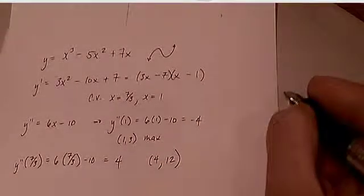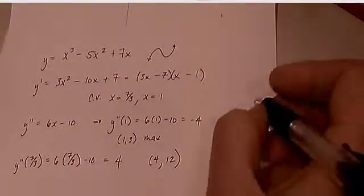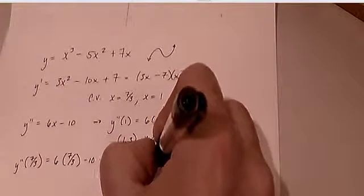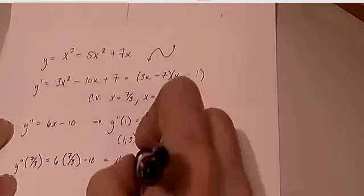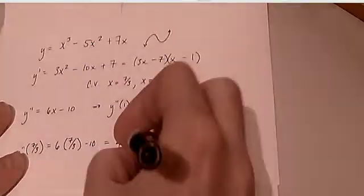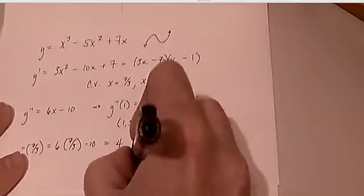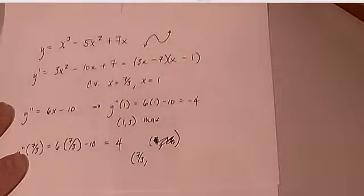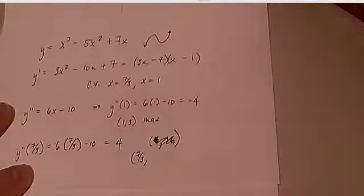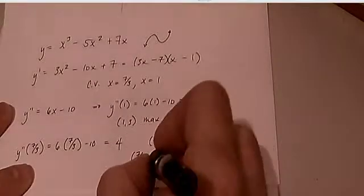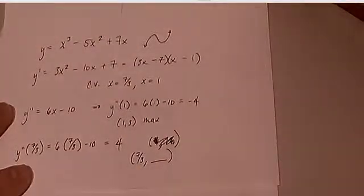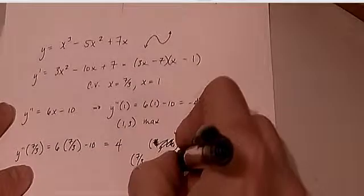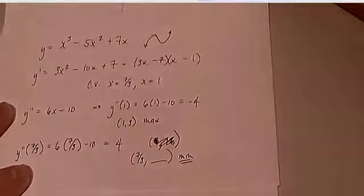Oh wait — I was plugging in 4 there, but we should be plugging in 7/3. I was concentrating so much on my explanation that I messed that up. Of course, cubing a fraction is going to be a little messy, but that y-value at x = 7/3 is going to be our minimum value.